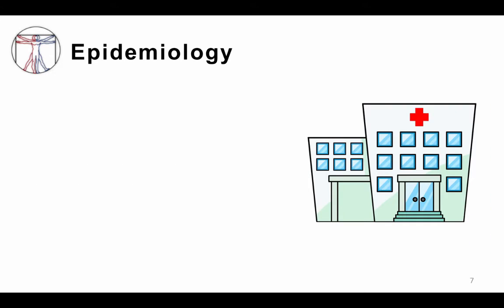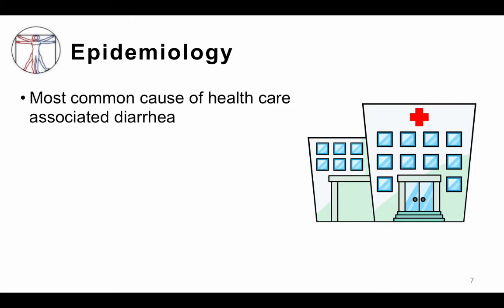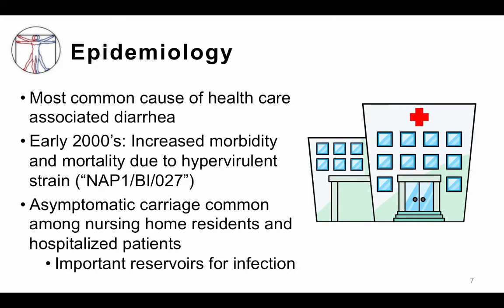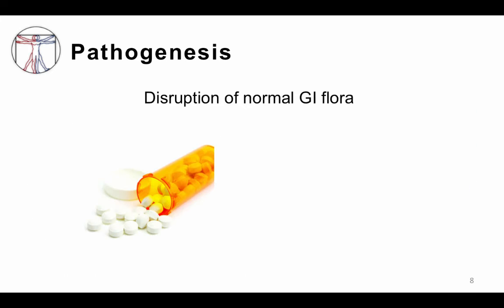Why is C. diff so important? It's the most common cause of healthcare-associated diarrhea. There are actually a few different strains in circulation. Since the early 2000s, it was noticed that certain epidemics of C. diff had increased mortality and morbidity. The strain behind these epidemics was given the cumbersome name of the NAP1-BI-027 strain — you can call it the NAP1 strain for short — and it still remains in circulation today. Interestingly, asymptomatic carriage of C. diff is also common. About 20% to 50% of nursing home and hospitalized patients are asymptomatic C. diff carriers and serve as important reservoirs for infection. Patients who are colonized can spread disease to other vulnerable patients in the hospital or in the healthcare setting.